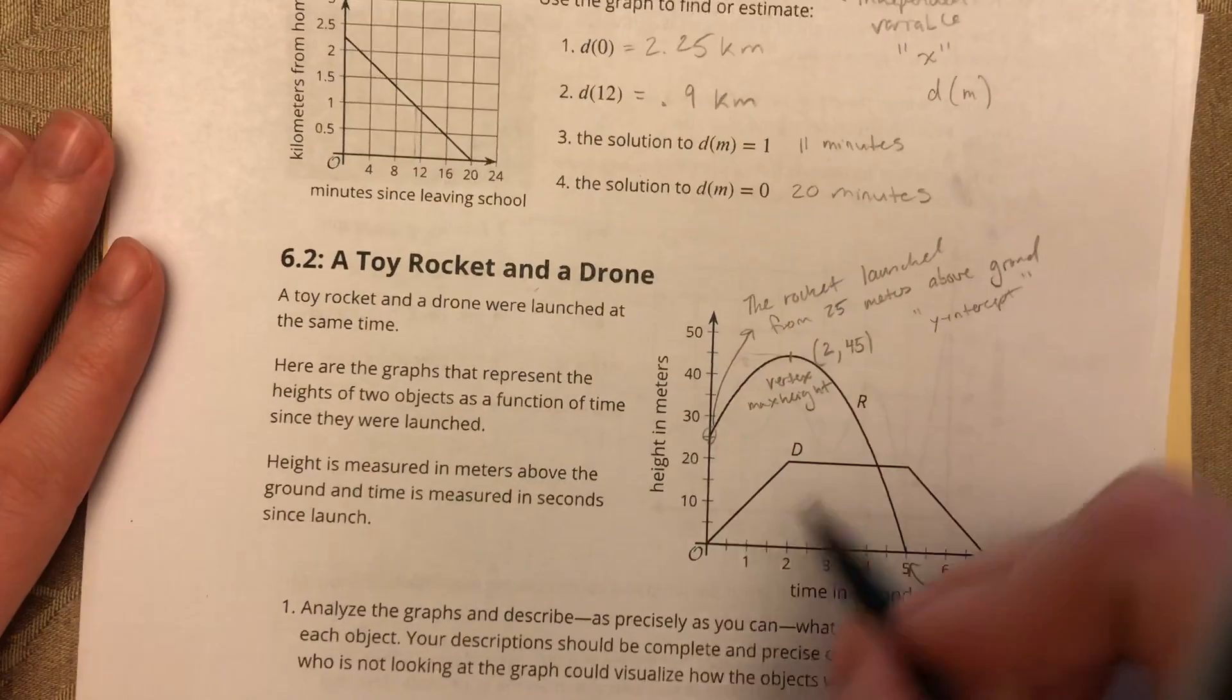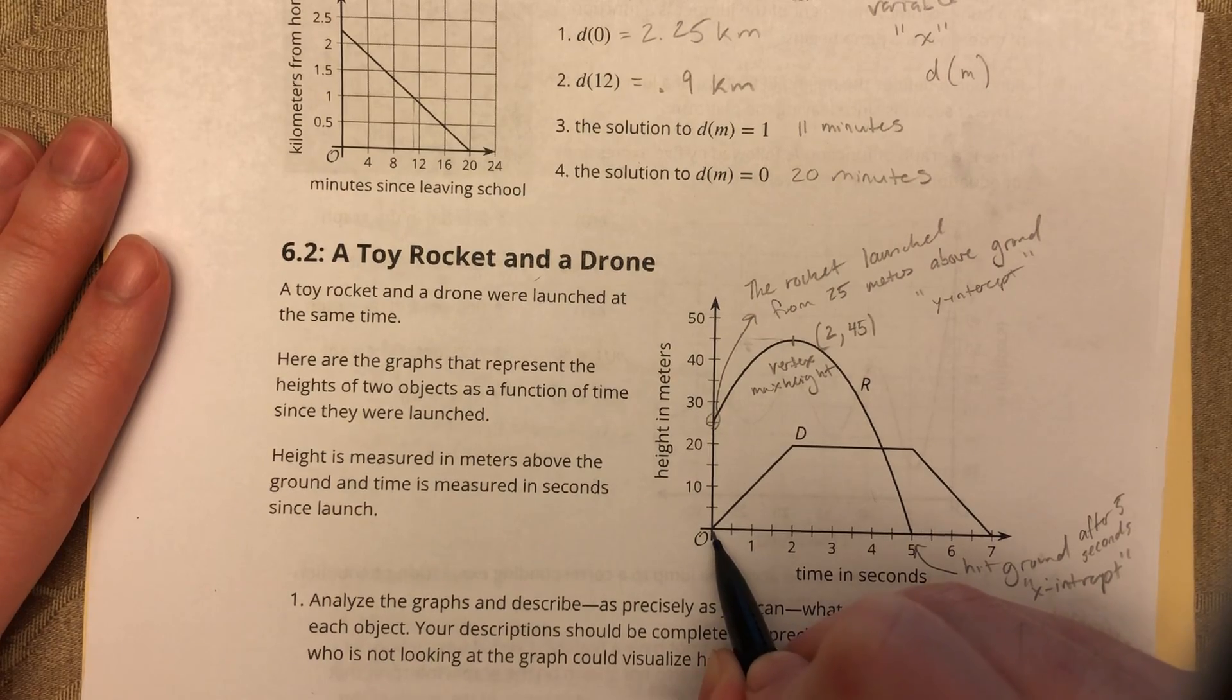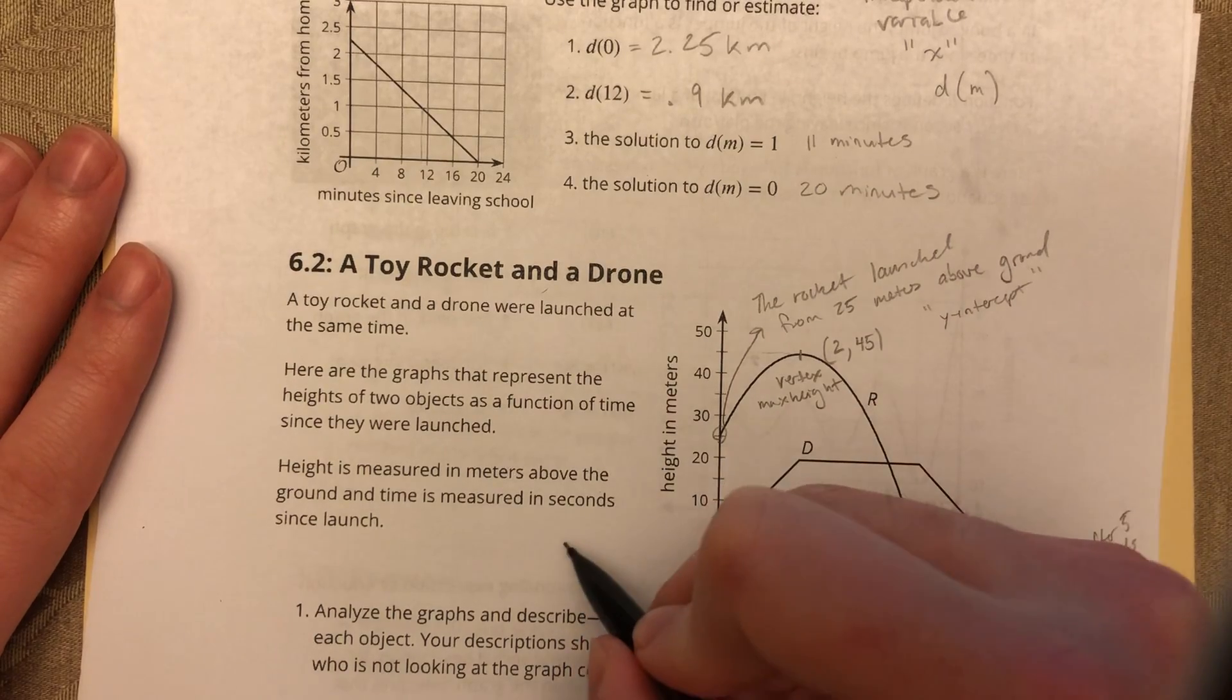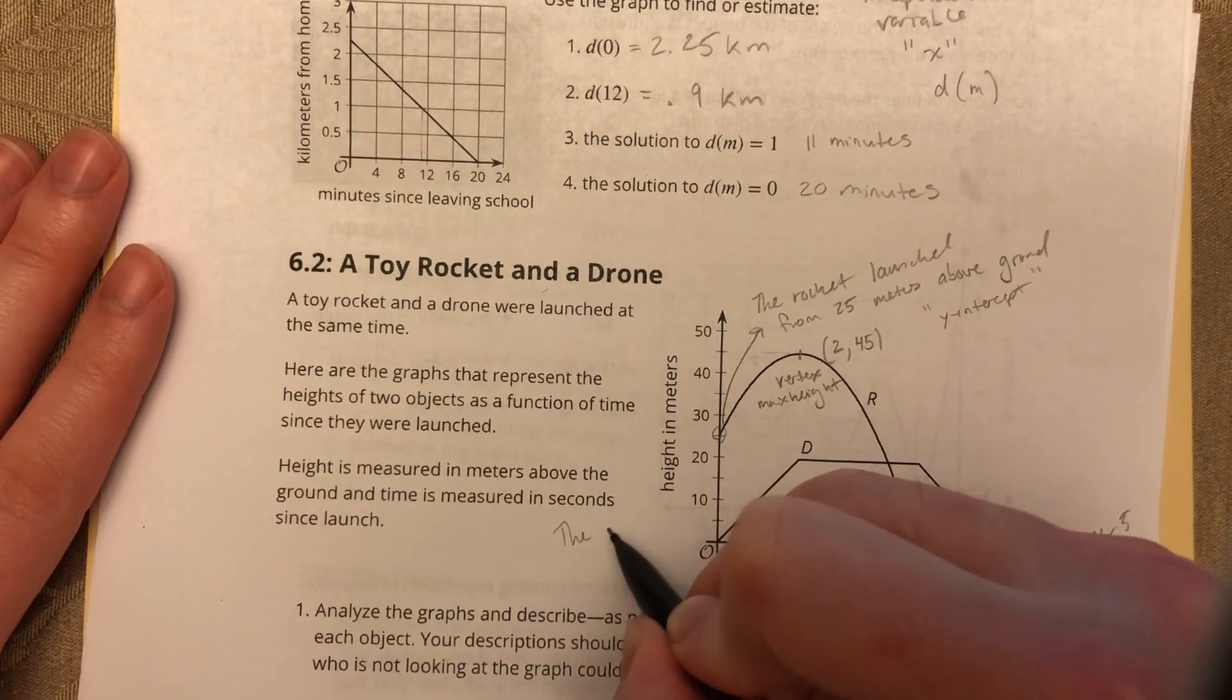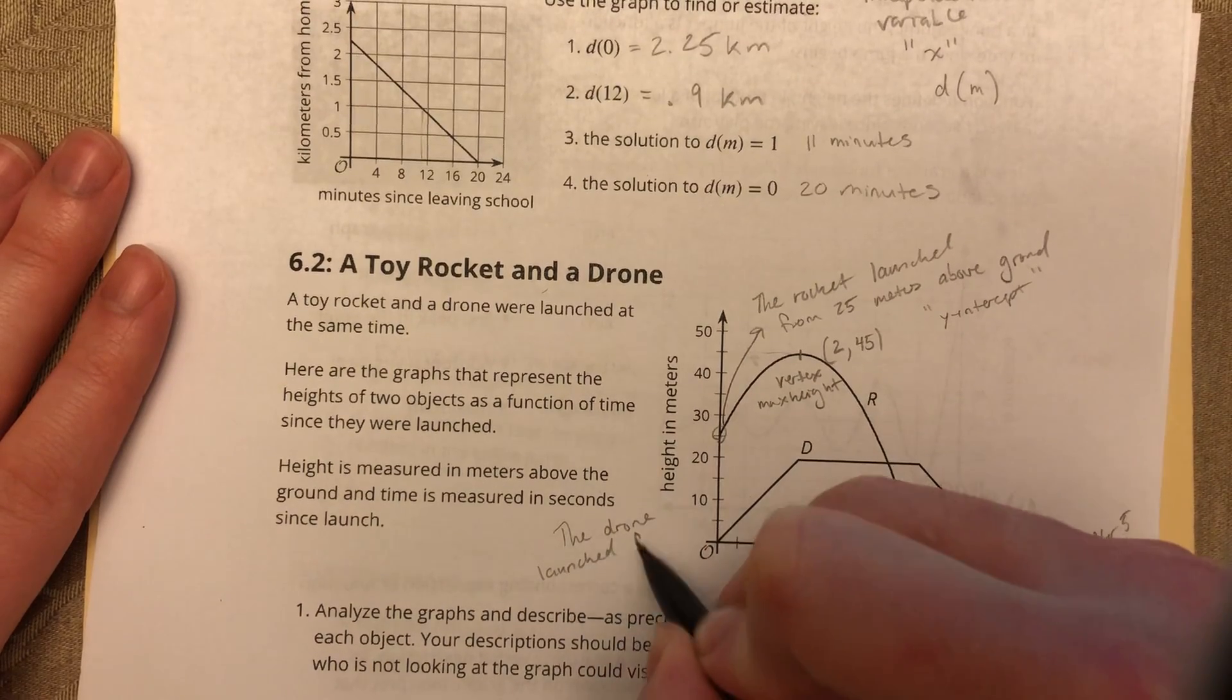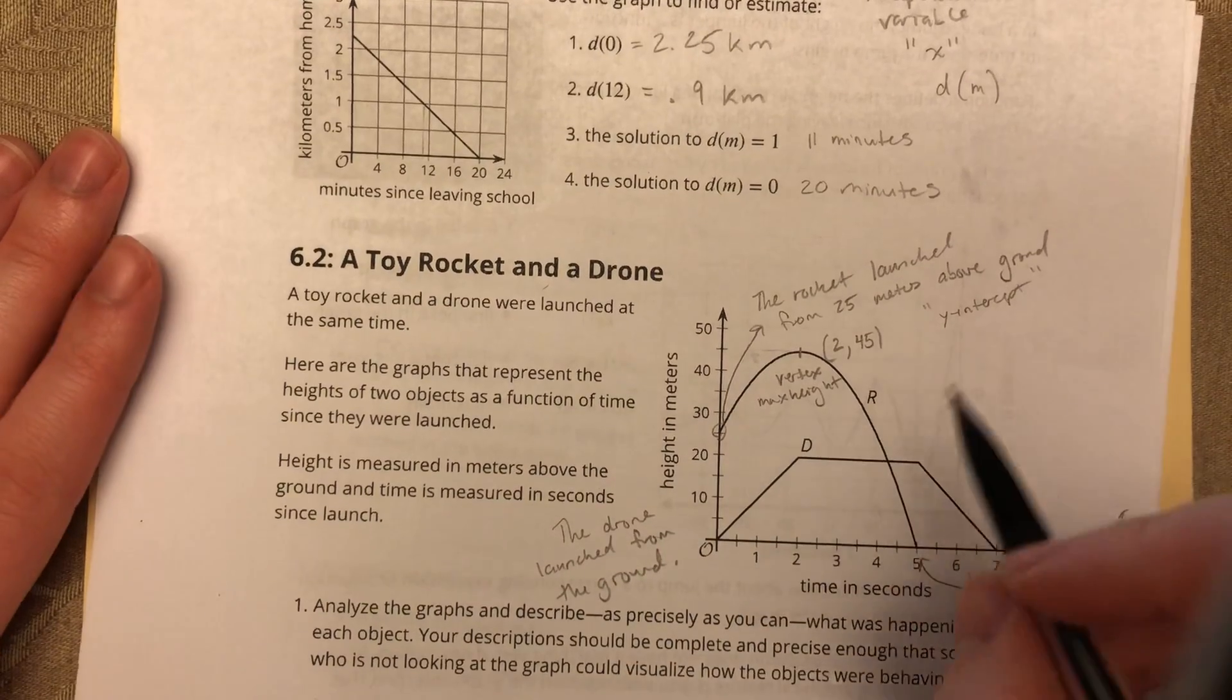So to begin with, we're starting right here at the origin. So my y-intercept and x-intercept is zero. So that would mean that the drone began, launched from the ground.